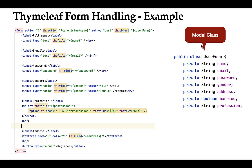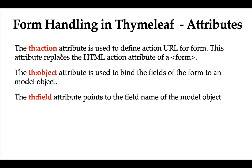Similarly, we use th:field to point to the password field, the probation field, and the address attribute of the model class object. Basically, we use the th:field Thymeleaf attribute to point to the field name of the model class object and bind the input form data. So these are the three important Thymeleaf attributes we use while handling forms in a Thymeleaf template.